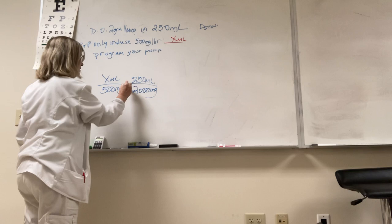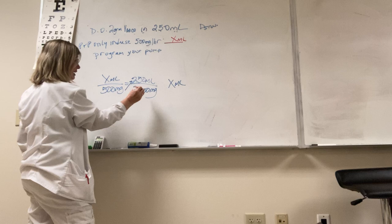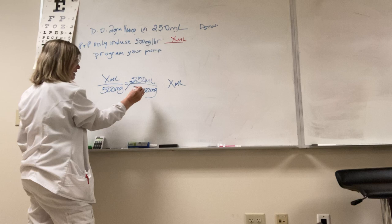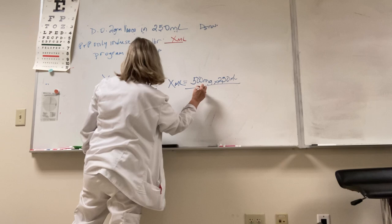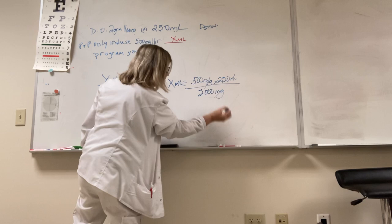Again, I'm just making this crap off you guys. This is not real. So now we're going to say X mLs, and I know I'm going to have this set up, equals 500 milligrams times 250 mLs divided by 2,000 milligrams. Milligrams are going to cancel out. I'm left with mLs. It's what I'm looking for, so I'm happy about that.